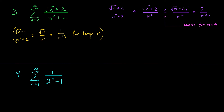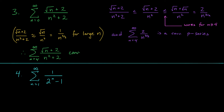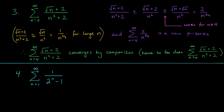We found a term larger than the general term of our series for all n ≥ 4. The sum from n = 4 to infinity of 2/n^(3/2) is two times a convergent p-series, and multiplying by two doesn't affect convergence. Since this series is convergent and the terms in our series are smaller, we conclude that the sum from four to infinity converges by the comparison test. And since those first four terms don't affect convergence, our original series is convergent as well. Making these types of estimates gets easier with practice, so make sure to check out the practice problems.